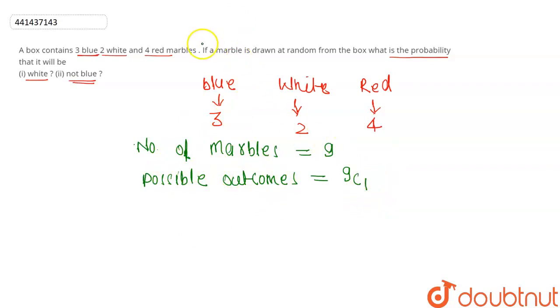First case: white. We need to find the number of favorable outcomes. We can denote this as n(A). What is the number of favorable outcomes?